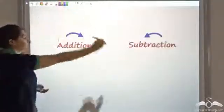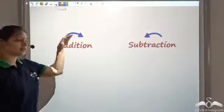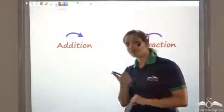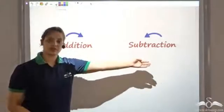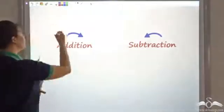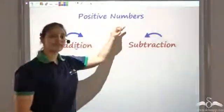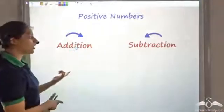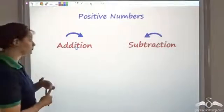We had seen that if I want to add positive numbers, I move in the forward direction. If I want to subtract, I move in the backward direction. So addition and subtraction I had already seen, but this was only true for positive numbers. Now we know that negative numbers also exist, so how can I add and subtract negative numbers? That's the question now.